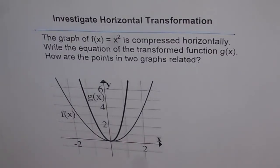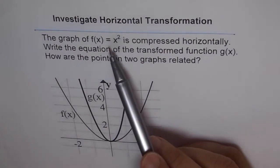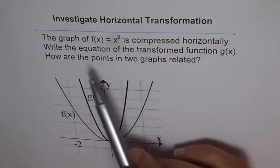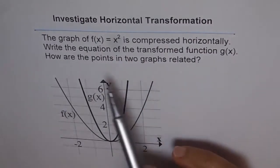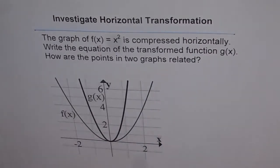Let us investigate horizontal transformation. Here we are given a graph of a parabola and it is compressed horizontally. We'll try to analyze it. The graph of function f(x) = x² is compressed horizontally. Write the equation of the transformed function g(x). How are the points on the two graphs related? That is what we'll try to understand with the help of this example.